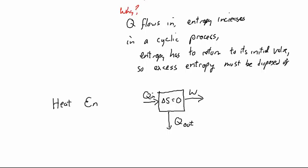This is called a heat engine. Internal combustion engines and steam engines are heat engines — they convert heat into work, though not all of it. For heat to flow in, it must come from a source hotter than the engine; for heat to flow out, there must be a place colder than the engine. We think of these as reservoirs.